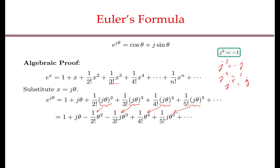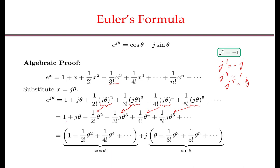Now what we will do is collect the real terms and the imaginary terms. The real terms are: 1, the even-power terms, which all go together. All the odd-power terms are imaginary terms because they are pre-multiplied by j, so they are collected in one big term. You need to note that this collected real series is the series expansion for cos θ, and the imaginary series is the series expansion for sin θ. Therefore, we obtain e to the power of jθ equals cos θ plus j sin θ.